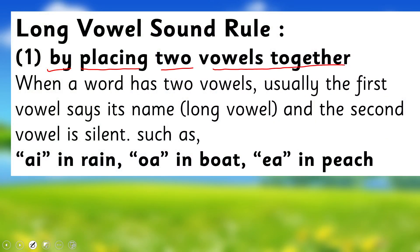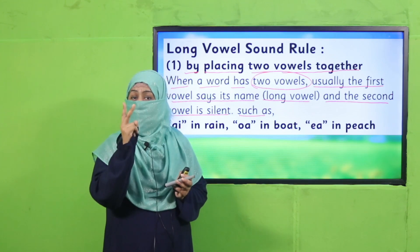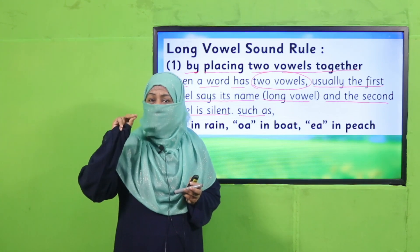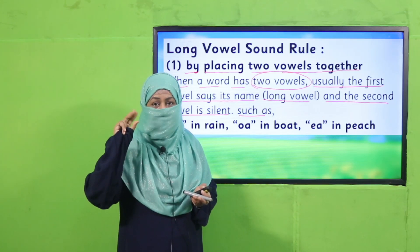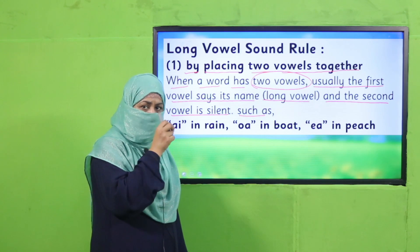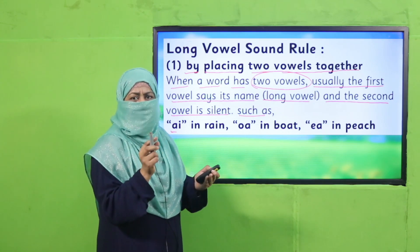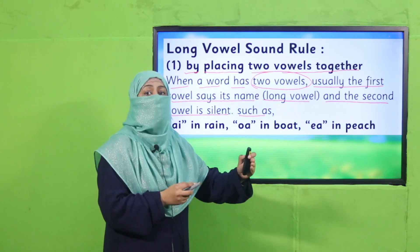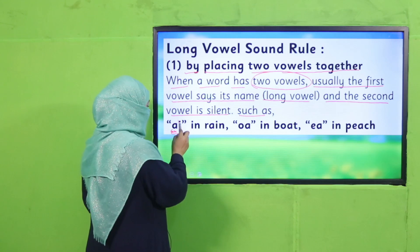The second rule: when a word has two vowels together, usually the first vowel says its name — that's the long sound — and the second vowel is silent. Here is a small song to remember: 'When two vowels are walking, the first does the talking and says its name.' So whenever you find two vowels together in a word, the first vowel gives its long sound — A, E, I, O, U — and the second remains silent.